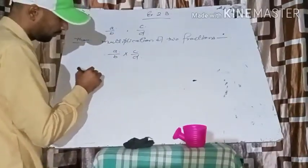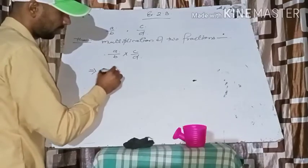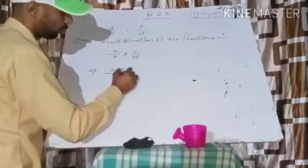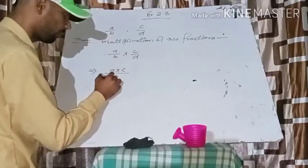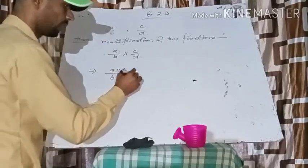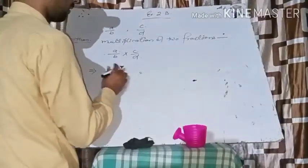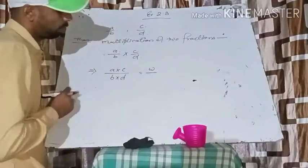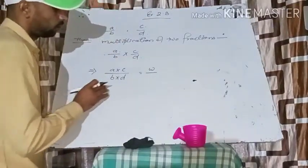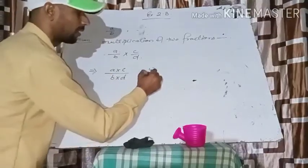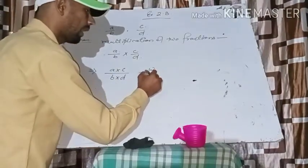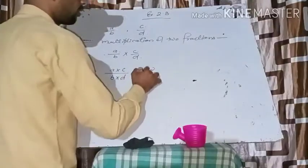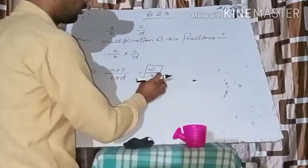In the next step, you will solve like this: a into c, means product of the numerators, upon product of the denominators. When you do the product of a and c, you will get w as answer. When you do the product of b and d, suppose you get x as answer. Then you can change into the mixed fraction or extended form of that fraction.